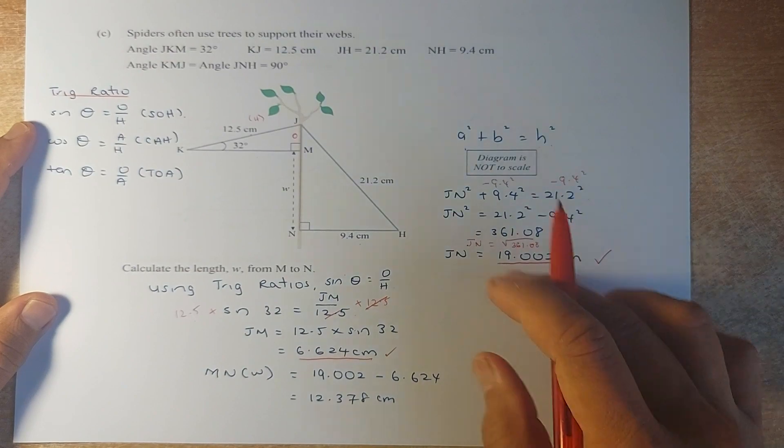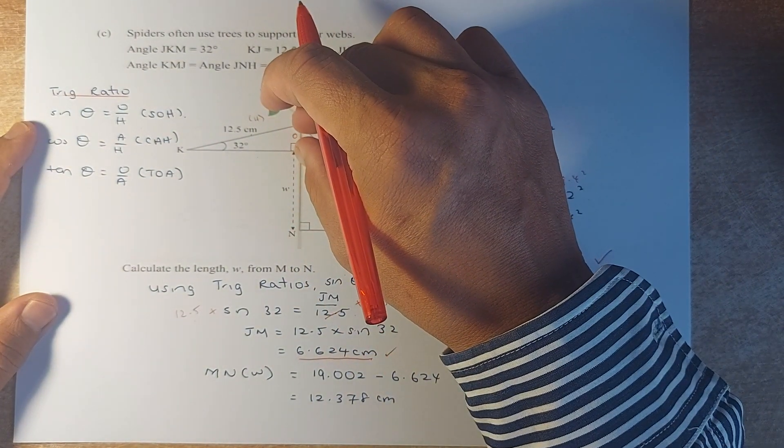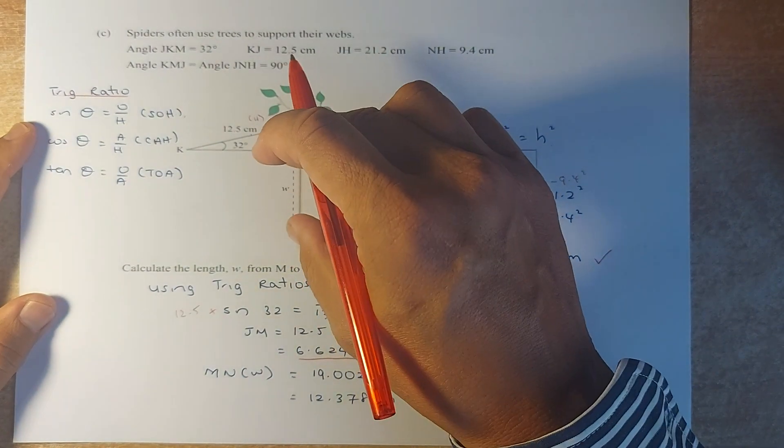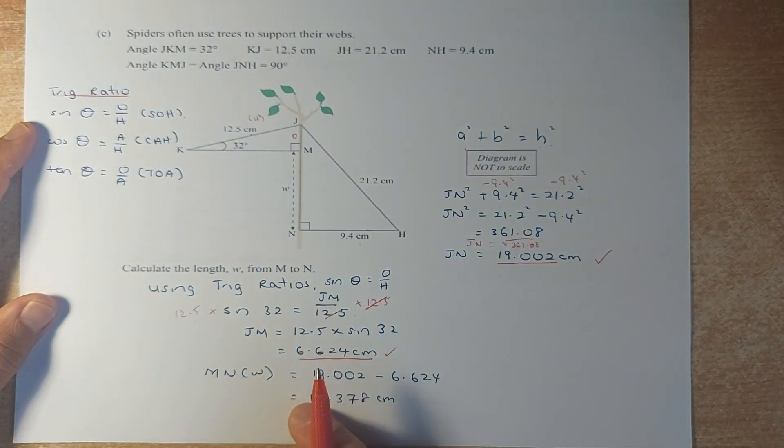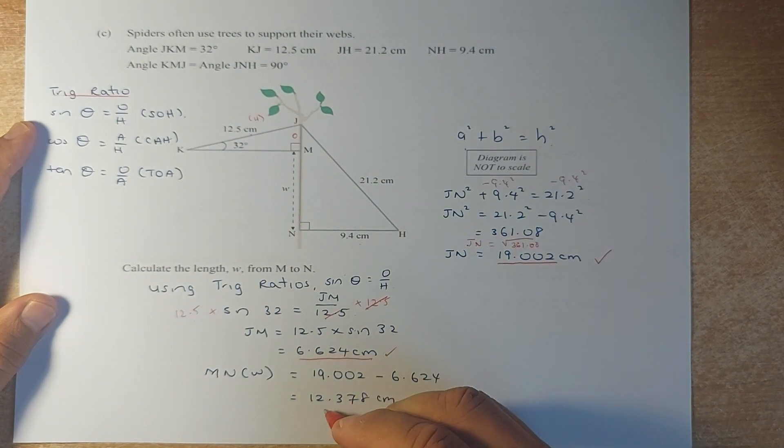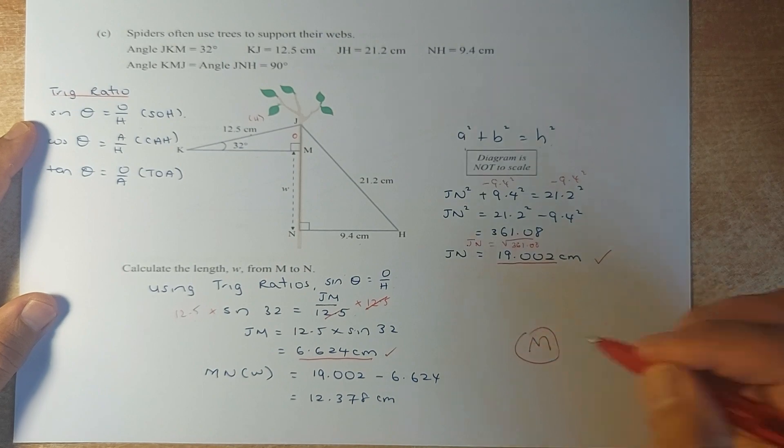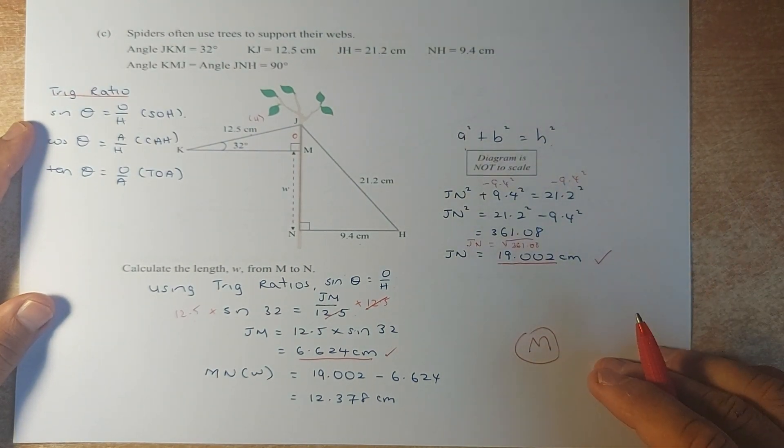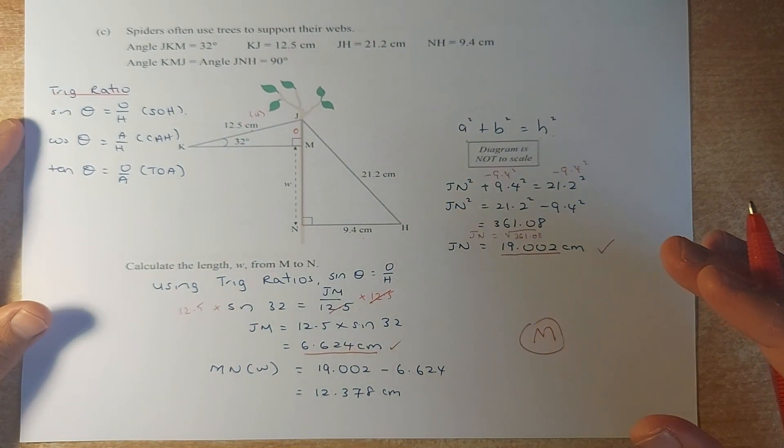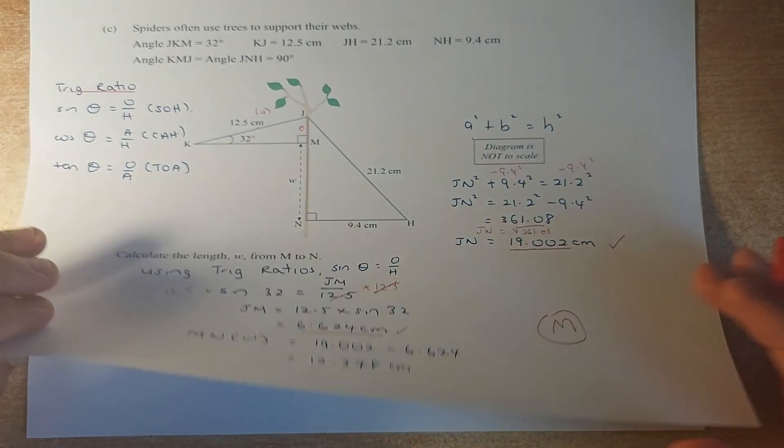So if you know your JH is 19.002 and your JM is 6.624, to calculate your W or MN, you take this number minus that number and you get 12.378. And that will be another merit. Try again if you're not sure. Do it again and you should be getting better the second time around.